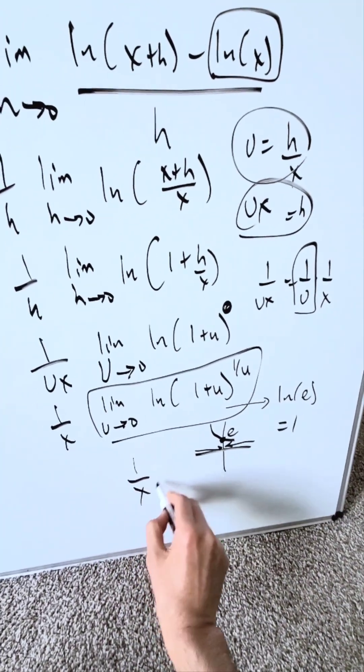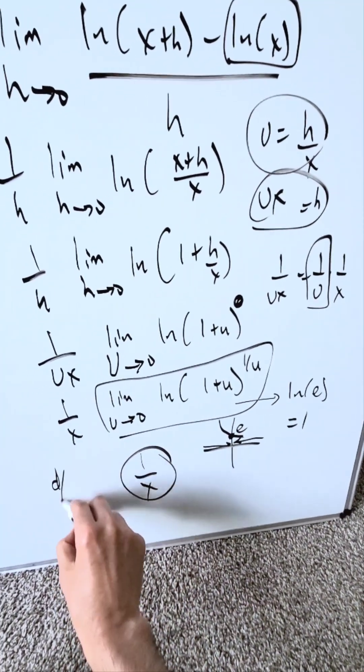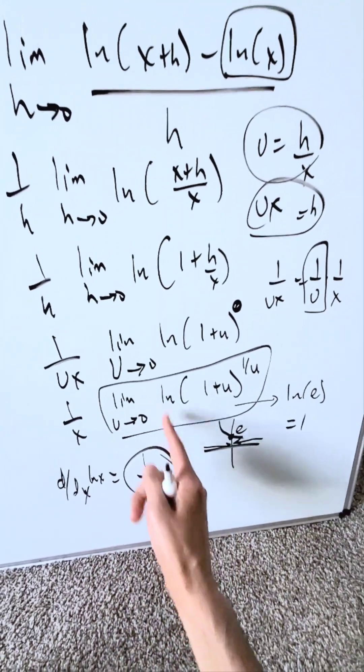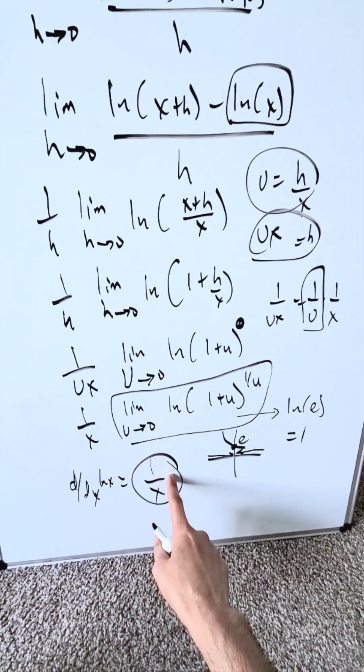What remains is exactly 1 over x. We've established now that the derivative of your natural log x is equal to 1 over x. And this right here is your limit approach to determining this.